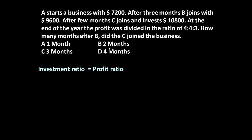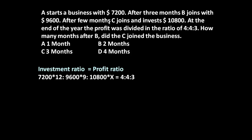So the investment ratio equals the profit ratio. A starts the business with $7200 for 12 months because A invested $7200 for the full 12 months. B joins after three months with $9600, meaning B invested $9600 for only 9 months. Let us assume C invests $10800 for x months only.